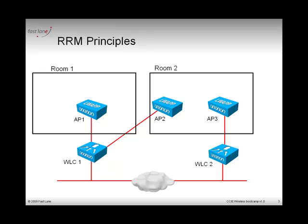Let's look at how RRM works. You have two controllers, WLC1 and WLC2. WLC1 has two access points, AP1 and AP2, and WLC2 has one access point, AP3. Each access point is going to send, every 60 seconds, a message called an RRM neighbor message. This is sent over the air on all service channels.